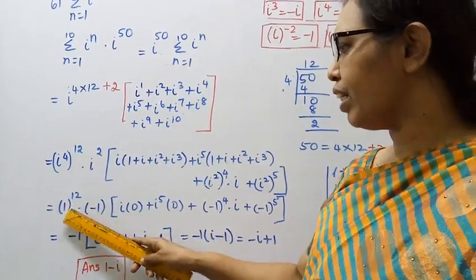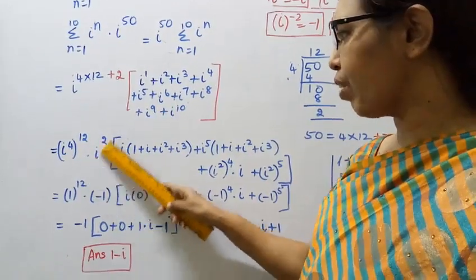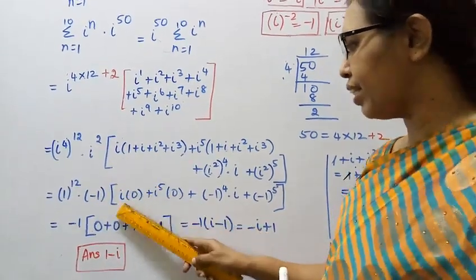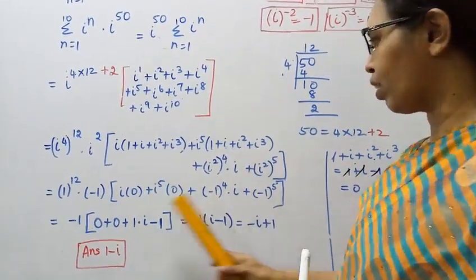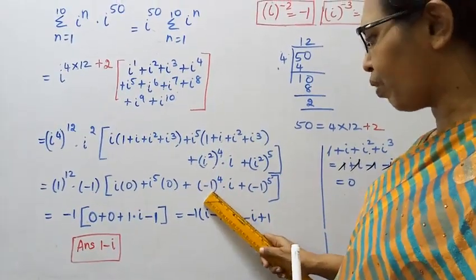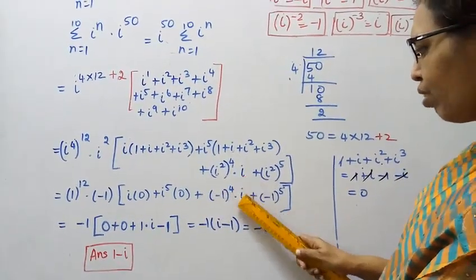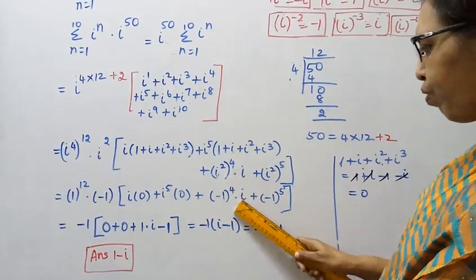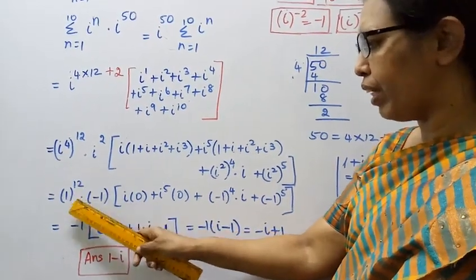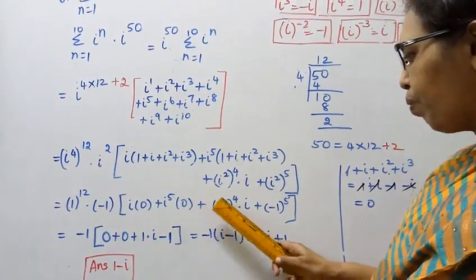Upon either one, i power 4 in a day value: i power 4 equals 1, 1 power 12 equals 1. i square value minus 1. i power 4 equals 1, 1 power 12 equals 1. i square value minus 1. So 1 plus minus 1 minus 1, and minus 1 the whole power 4, into i, plus minus 1 the whole power 5.